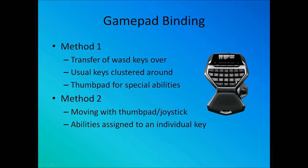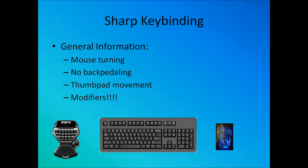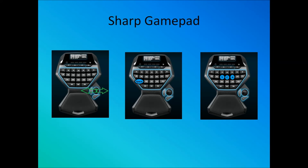My way — Sharp keybinding — is a hybrid. It uses a gamepad (I use a Logitech one), a keyboard, and a mouse with two side buttons. As we talked about, mouse turning is important, no backpedaling is important, and thumbpad movement is very important. But my way specifically stresses modifiers. Utilizing modifiers the right way really breaks open keybinding and makes it much easier to use.